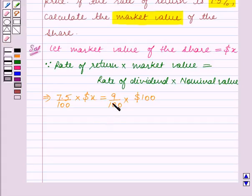Now these zeros get cancelled on the right hand side and this implies X is equal to 9 into 100 upon 7.5.